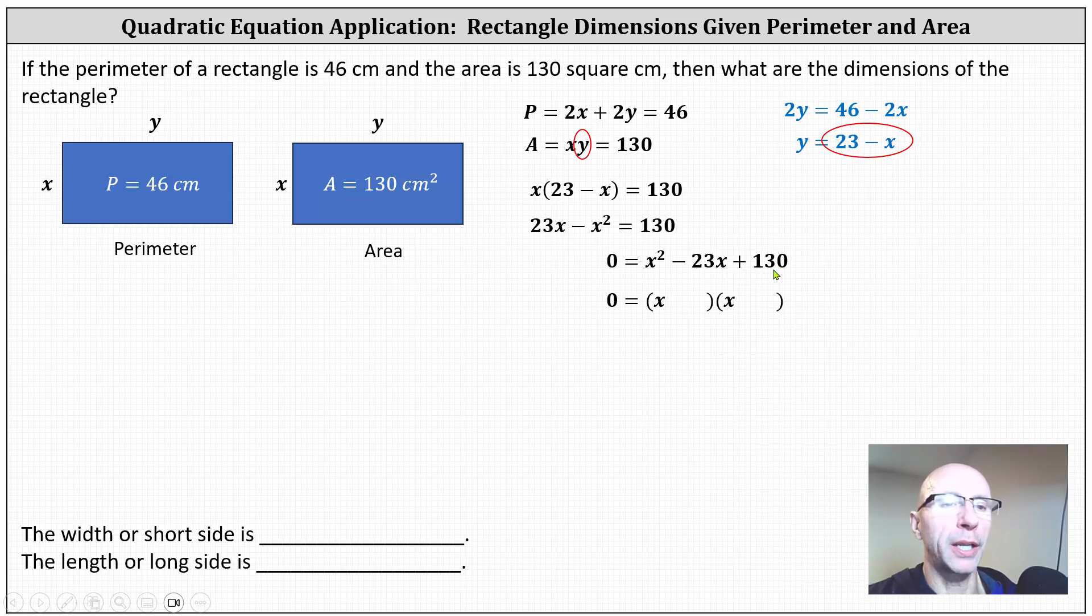Well, 10 times 13 is equal to 130 and the sum is 23. And since we need a sum of negative 23, we will use the factors of negative 13 and negative 10. This gives us a binomial factor of x minus 13 and a binomial factor of x minus 10.